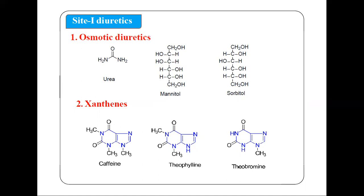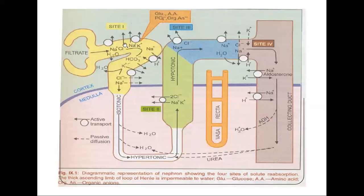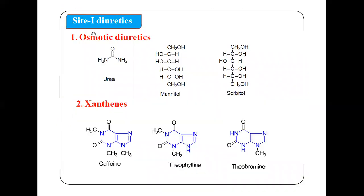The first class is osmotic diuretics. The second are xanthine derivatives. The third are carbonic anhydrase inhibitors. For site 1 diuretics, examples of osmotic diuretics include urea, mannitol, and sorbitol. For xanthines, examples include caffeine, theophylline, and theobromine. These also act on site 1.